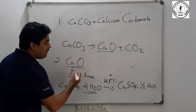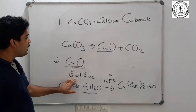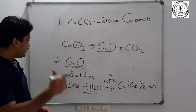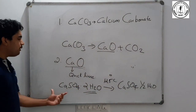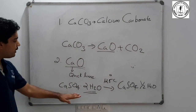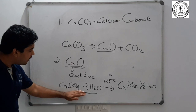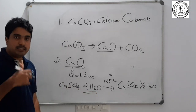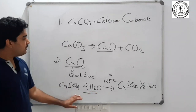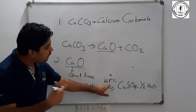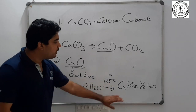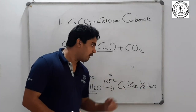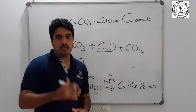Calcium oxide is called quicklime. To summarize: calcium sulfate 2H2O is gypsum, and that gypsum at 0.5 degrees gives calcium sulfate half H2O, which is Plaster of Paris.